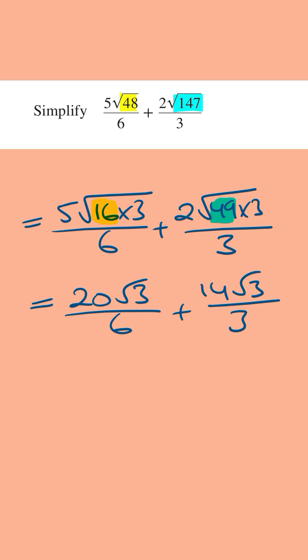From here, we can simplify the first fraction, 2 goes into this 3 times, into this 10 times. Now we've got the same denominators, and so we can add the numerators, and so we've got 10 plus 14, which is equal to 24, then we've got the root 3 all over 3.